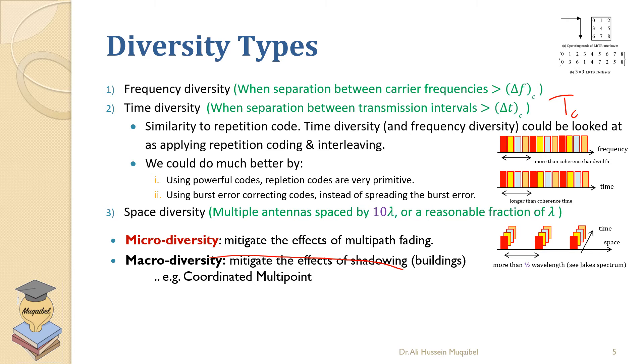We can also think of macro diversity where we mitigate the effect of shadowing and buildings. For example, if we have a mobile phone here, a mobile user with different base stations, if you want to avoid a building you could receive the same mobile from different base stations, and those base stations need to coordinate with each other.